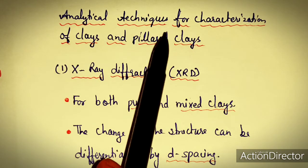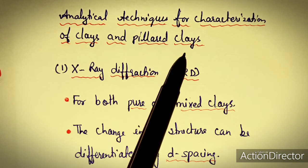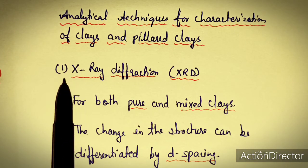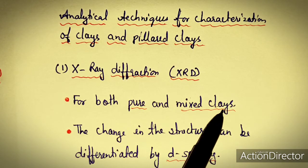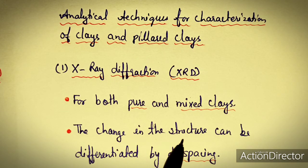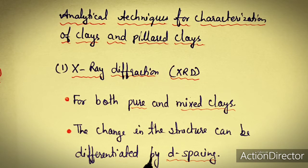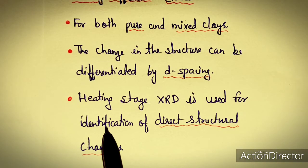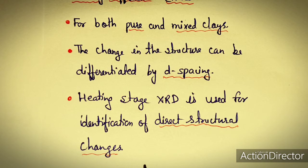Now we will study analytical techniques for characterization of clays and pillared clays. The first method is X-ray diffraction (XRD), which can be used for both pure and mixed clays as well as pillared clays. Structural changes can be differentiated by d-spacing, since XRD determines inter-atomic distances. Heating-stage XRD is also used for identification of direct structural changes.